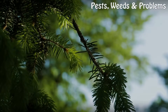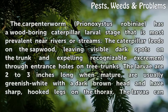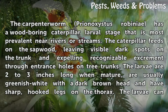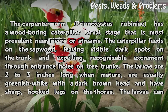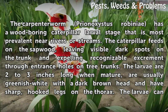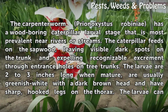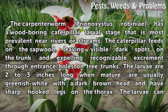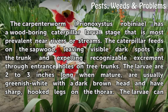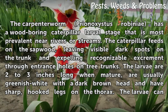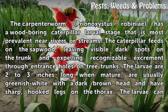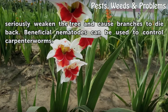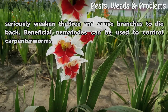Carpenter Worm. The carpenter worm Prinoxistus robiniae has a wood-boring caterpillar larval stage that is most prevalent near rivers or streams. The caterpillar feeds on the sapwood, leaving visible dark spots on the trunk and expelling recognizable excrement through entrance holes on tree trunks. The larvae are 2 to 3 inches long when mature, are usually greenish-white with a dark brown head and have sharp, hooked legs on the thorax. The larvae can seriously weaken the tree and cause branches to die back.